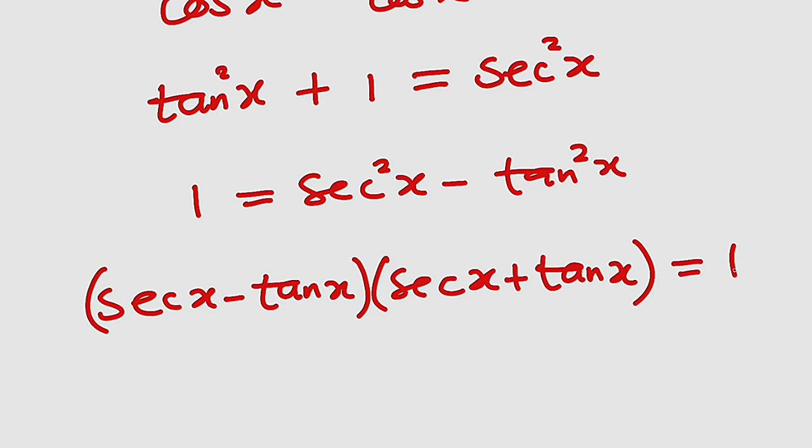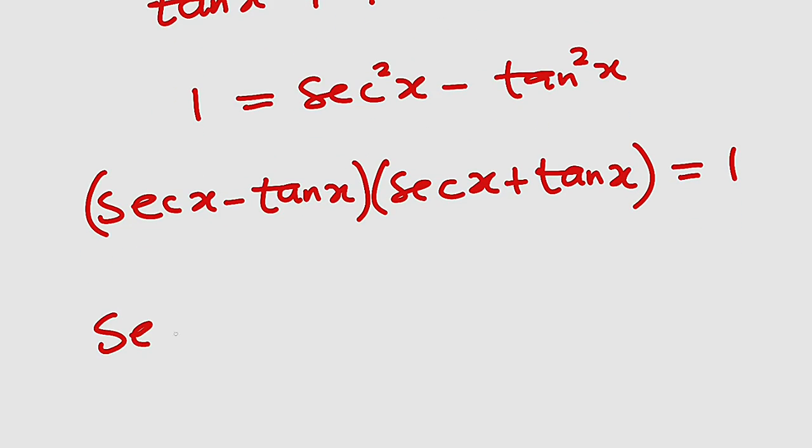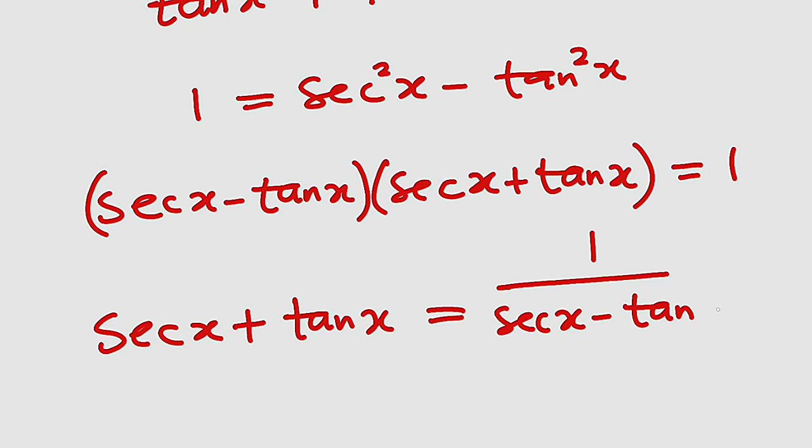The whole of this equals 1. So because we are looking for this, you can divide both sides by secant x minus tangent x. Therefore, secant x plus tangent x is nothing but 1 divided by secant x minus tangent x. Can you see? It is an identity.